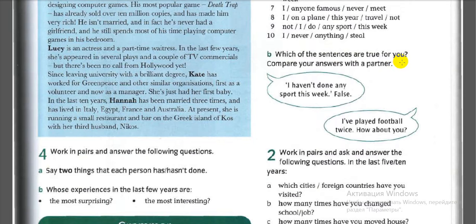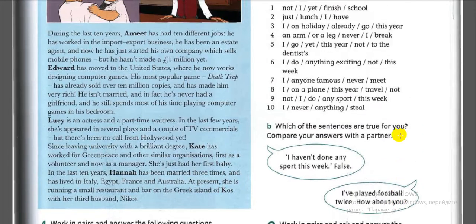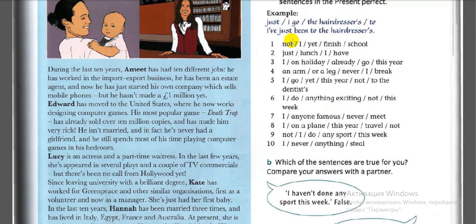Which of the sentences are true for you? Compare your answers with a partner. For example: 'I haven't done any sport this week — that's false, I've played football twice. What about you?' Pause and think about which sentences are true or false for you.